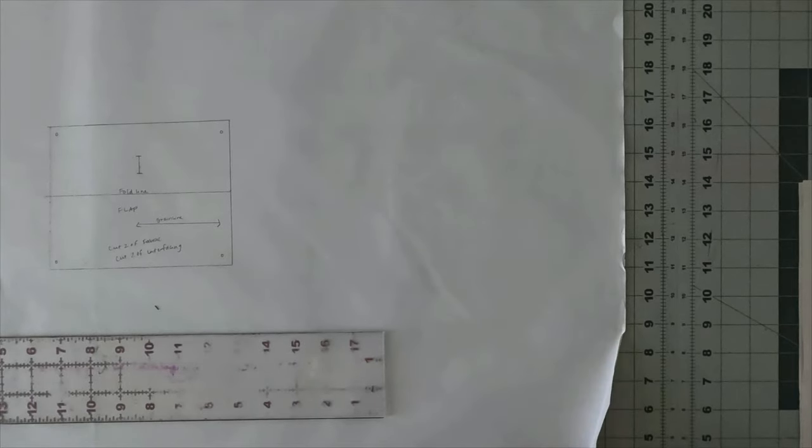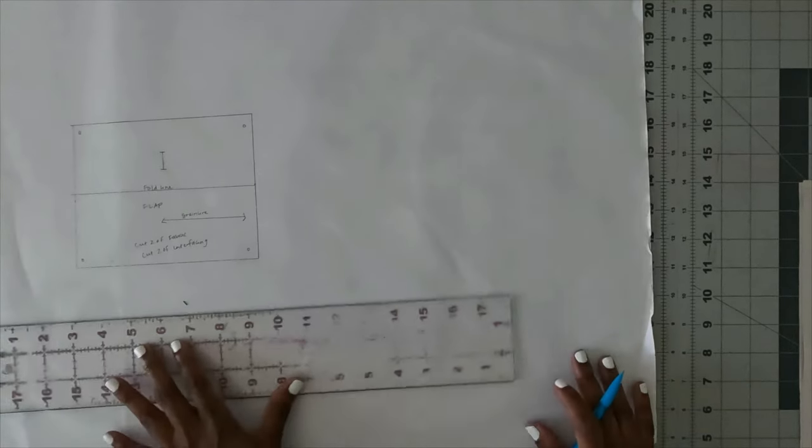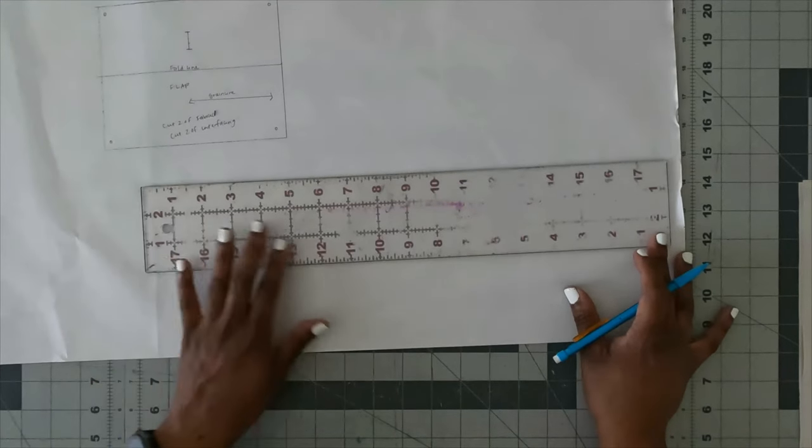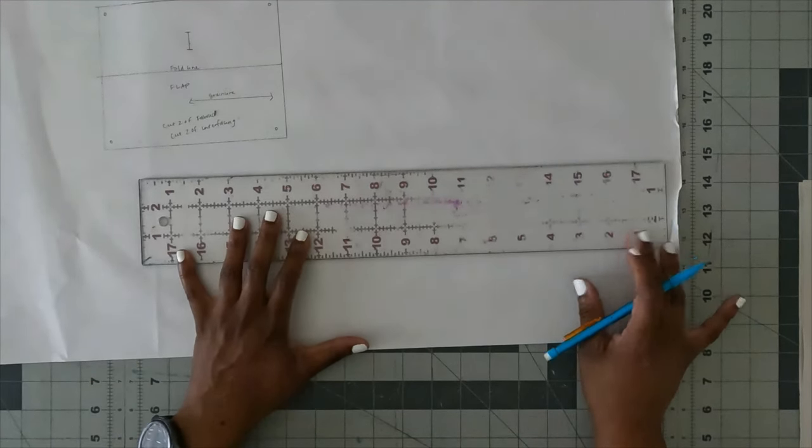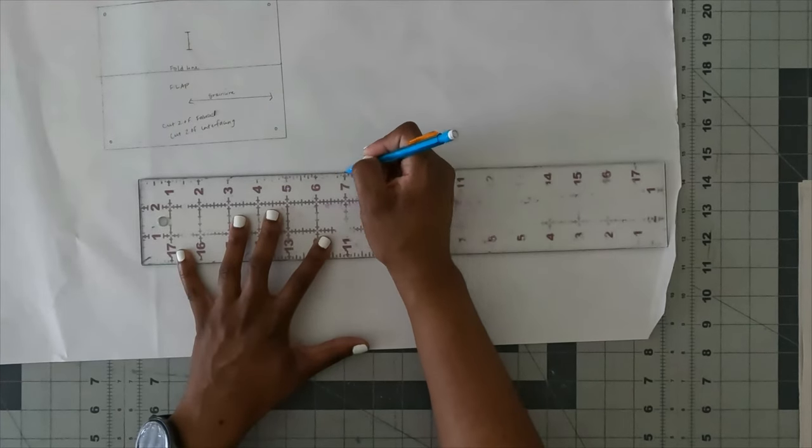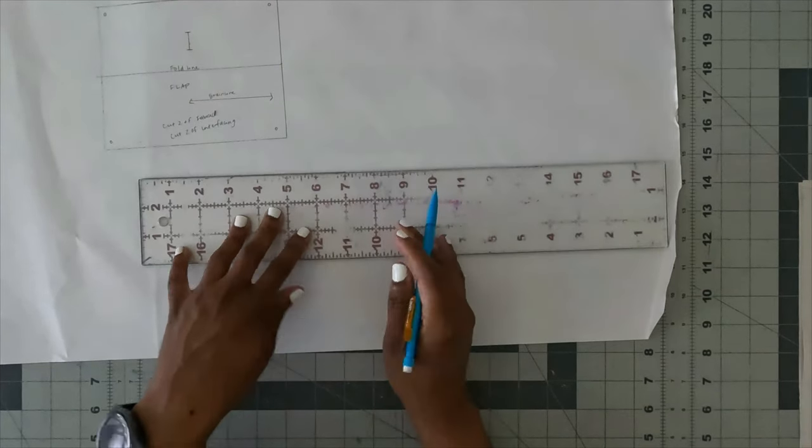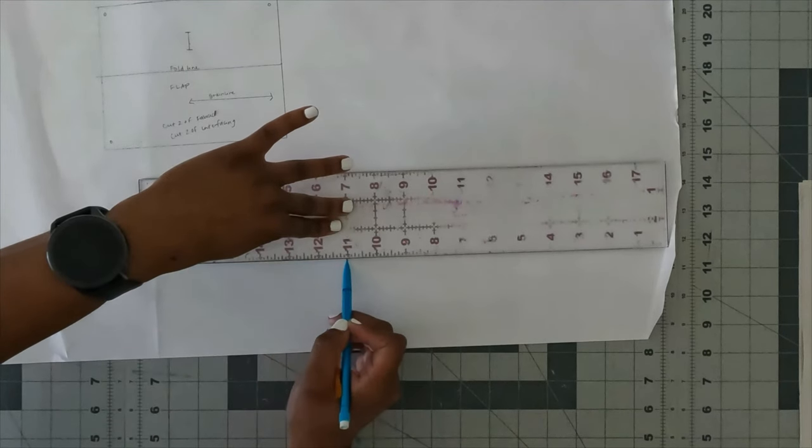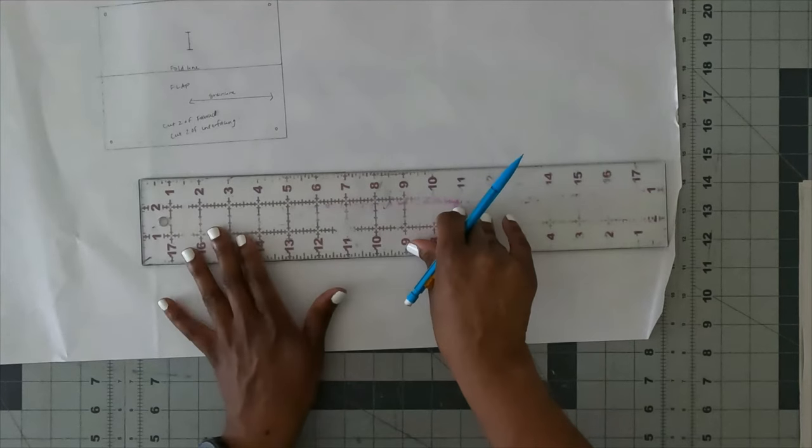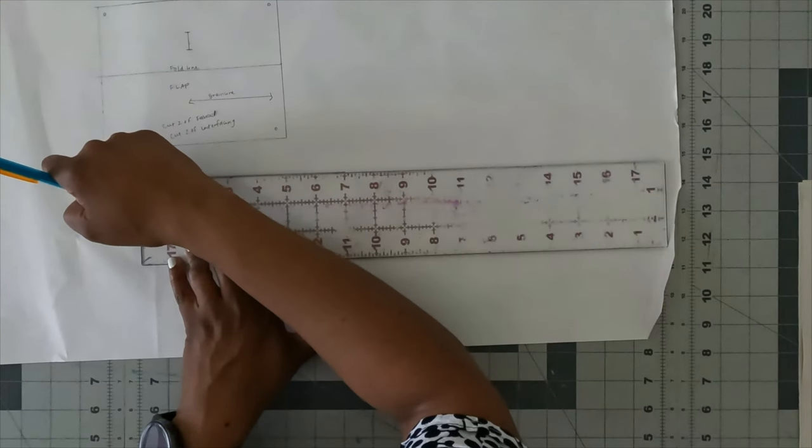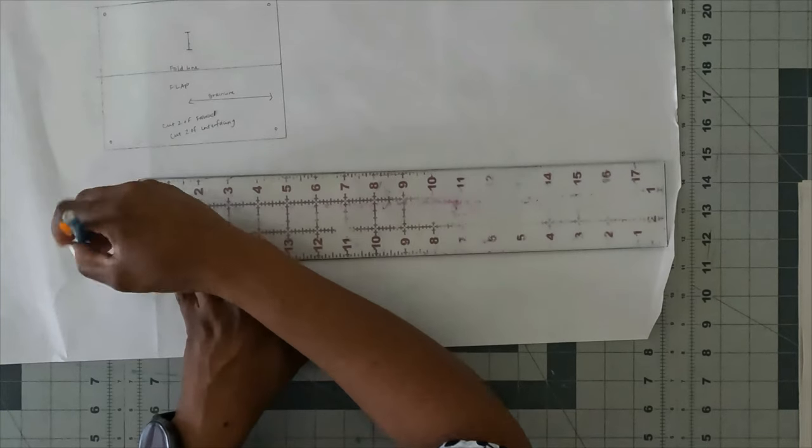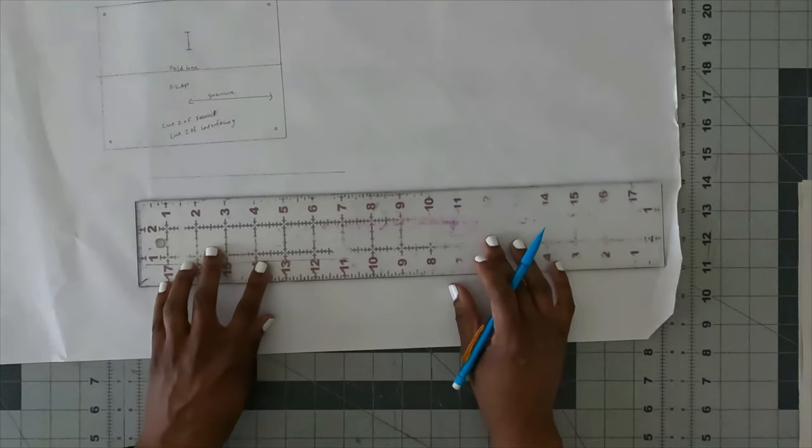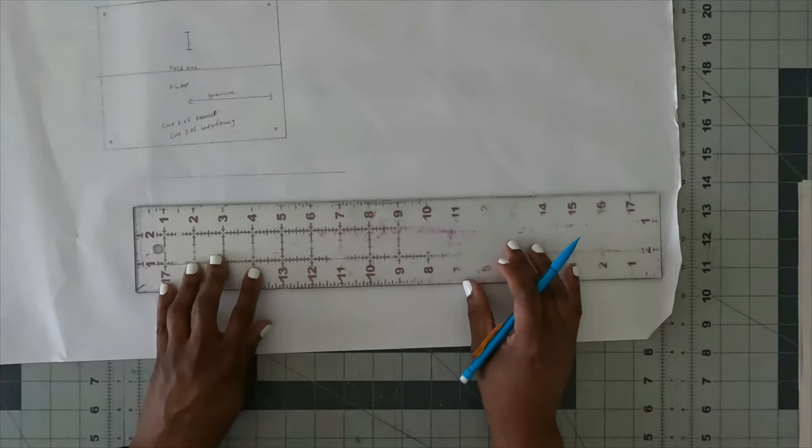Now I want my tab to be roughly about seven by two. So I'm just going to draft it down here. Just move the paper up so you can see, and I'm going to mark seven inches. And then I want to do two inches high. So now I did seven inches, but I forgot this ruler is three inches. So I'm going to just bring this down like this and mark seven inches.